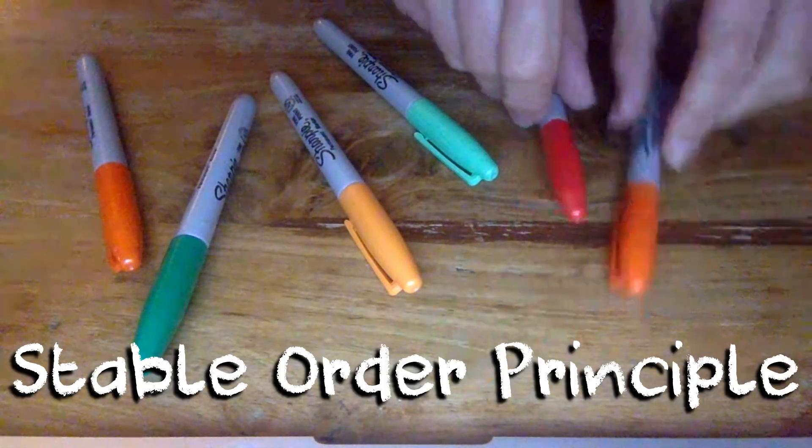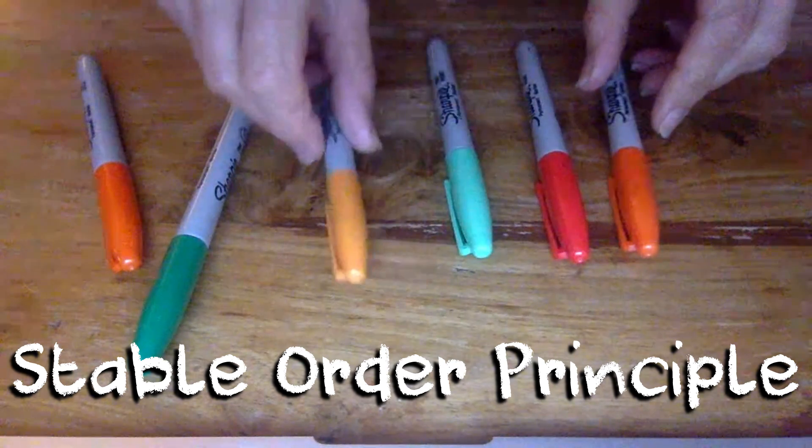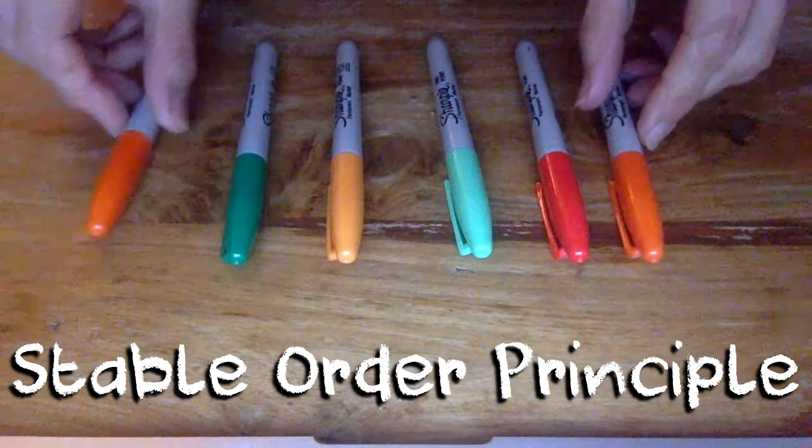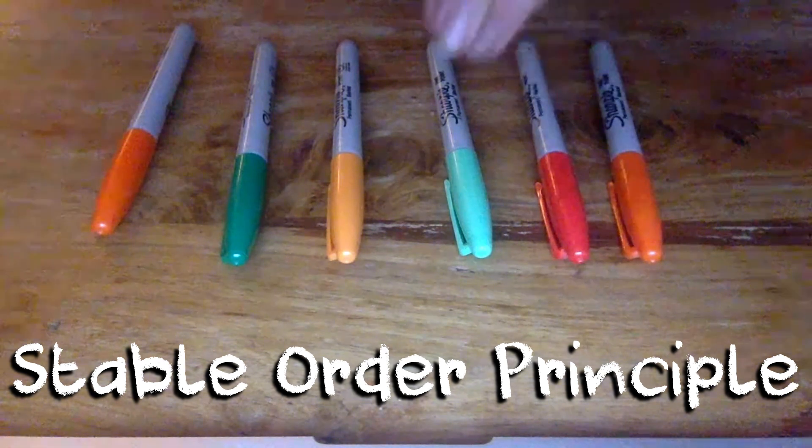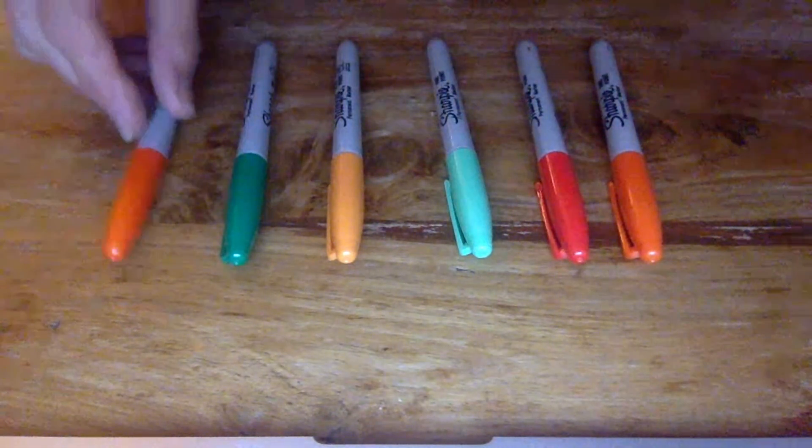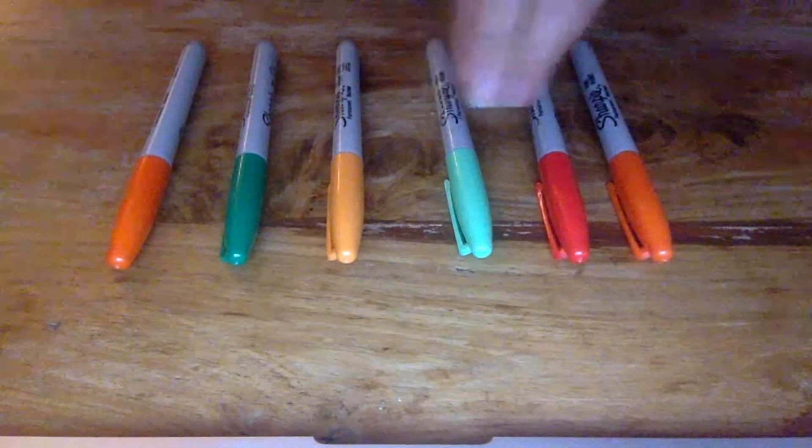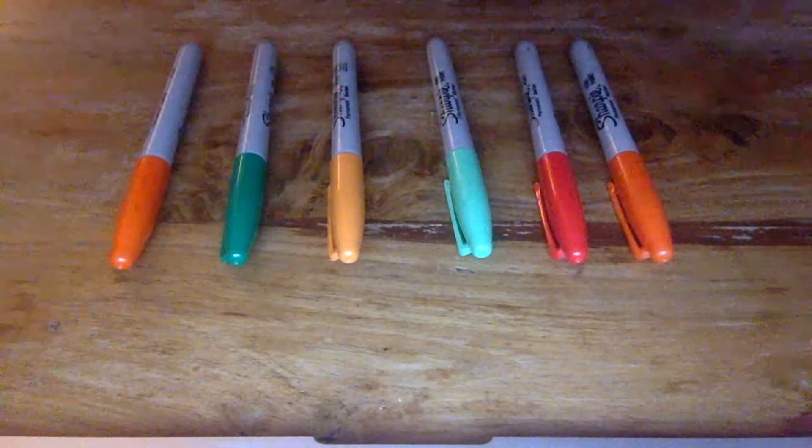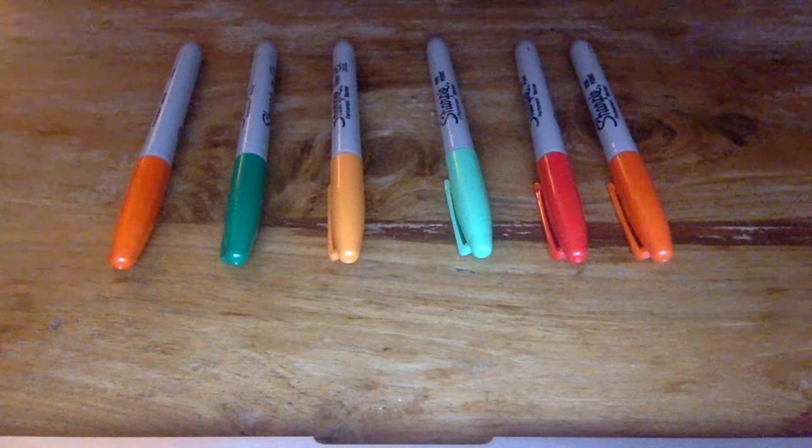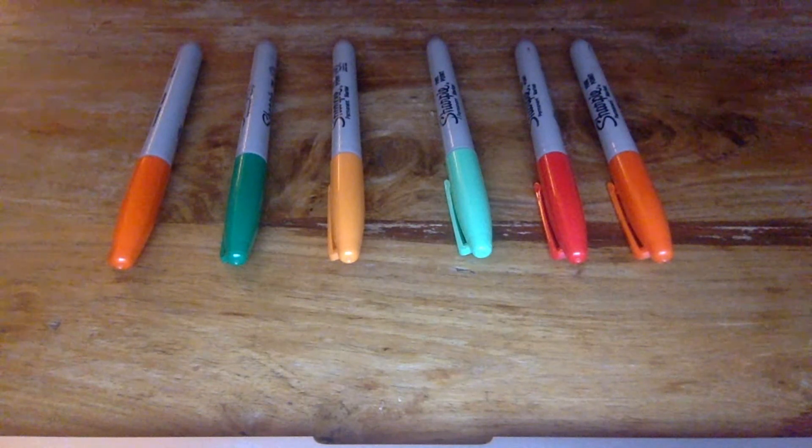The stable order principle refers to the number names being said in their correct order and knowing that the order of those numbers will not change. So one, two, three, four, five, six and not one, three, four, seven, six, five. Loads of counting songs and rhymes really help with this.